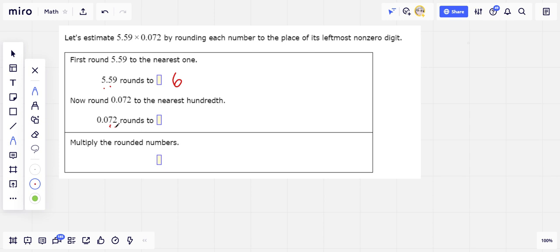is that 5 or above or below 5? It's below 5. So this is going to stay a 7, but that 2 is just going to become a 0 or really disappear. So this is 0.07 now. Okay.